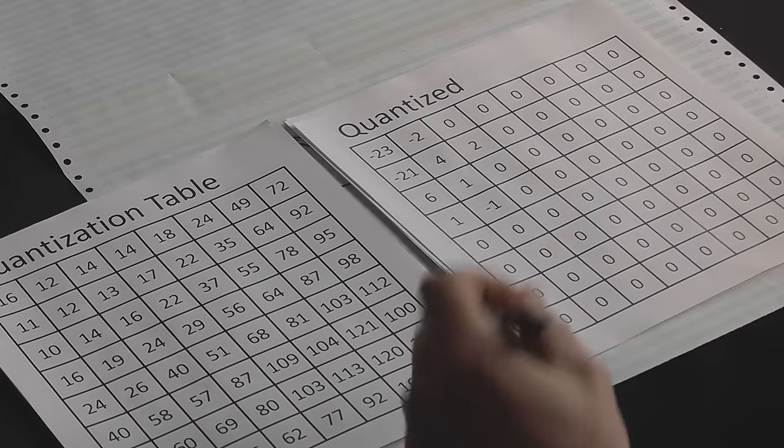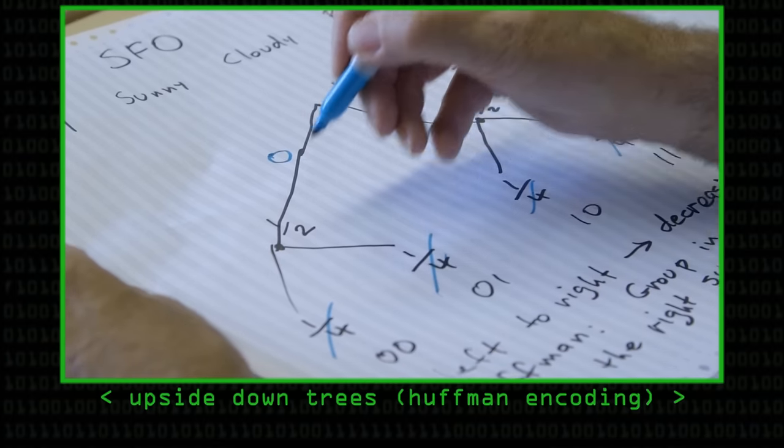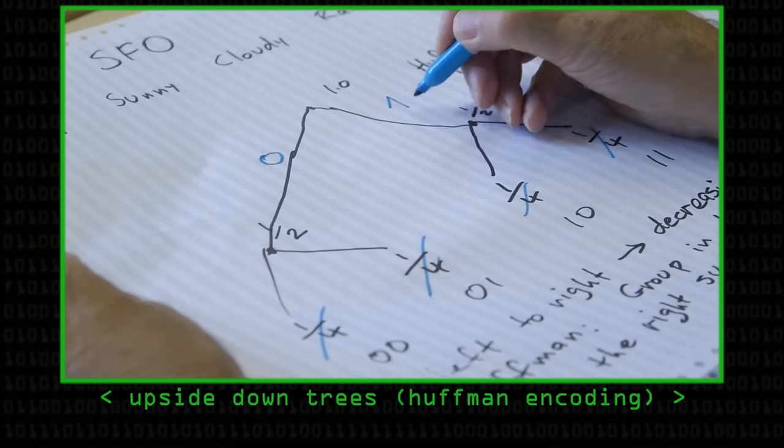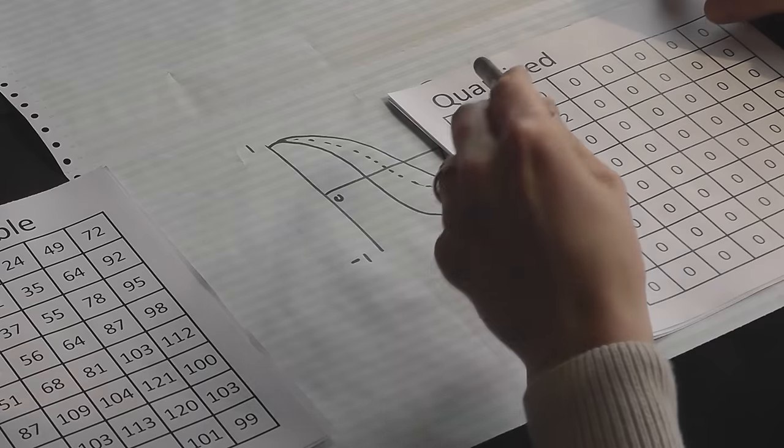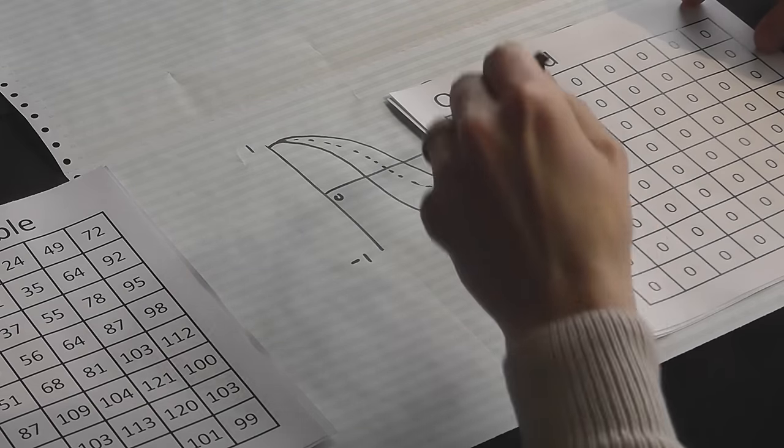So what we then finally do, when we want to output this information into our file, is we essentially list all these in a long line. We then use a Huffman encoding, which Professor Brailsford has covered in the video, to further compress this data.